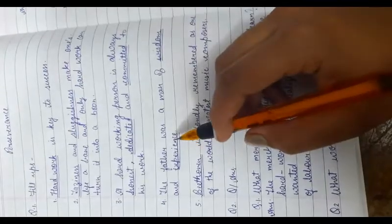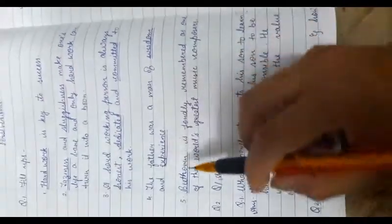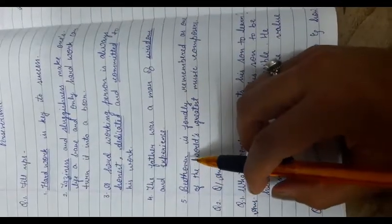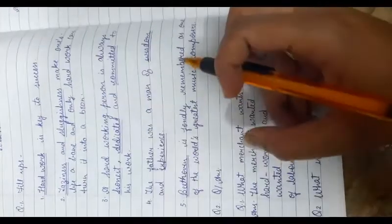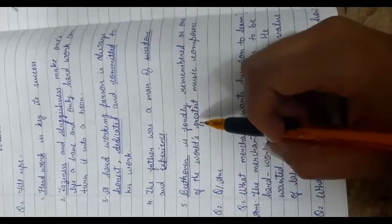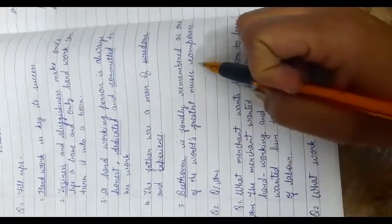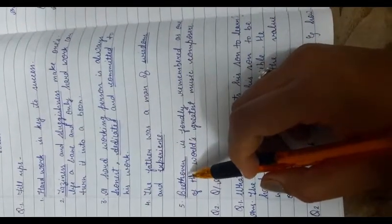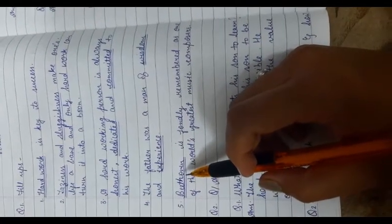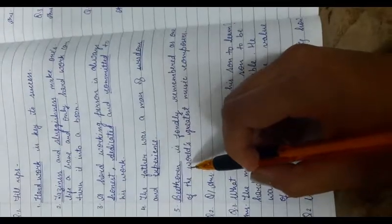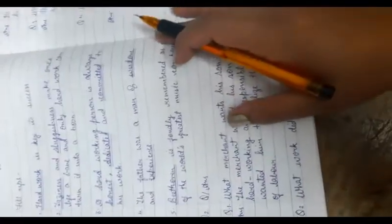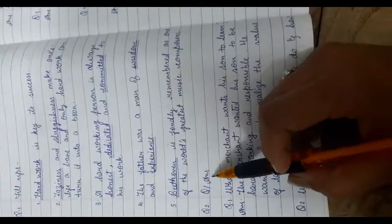Fifth one: Beethoven is fondly remembered as one of the world's greatest music composers. Spelling of Beethoven: B-E-E-T-H-O-V-E-N. We have to underline the word Beethoven. Next we have question and answers.